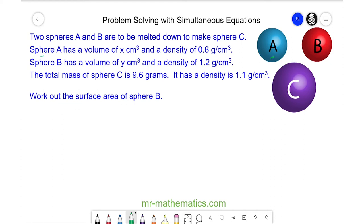Sphere A has a volume of X cm³ and a density of 0.8 g/cm³. Sphere B has a volume of Y cm³ and a density of 1.2 g/cm³. Sphere C has a mass of 9.6 grams and a density of 1.1 g/cm³.